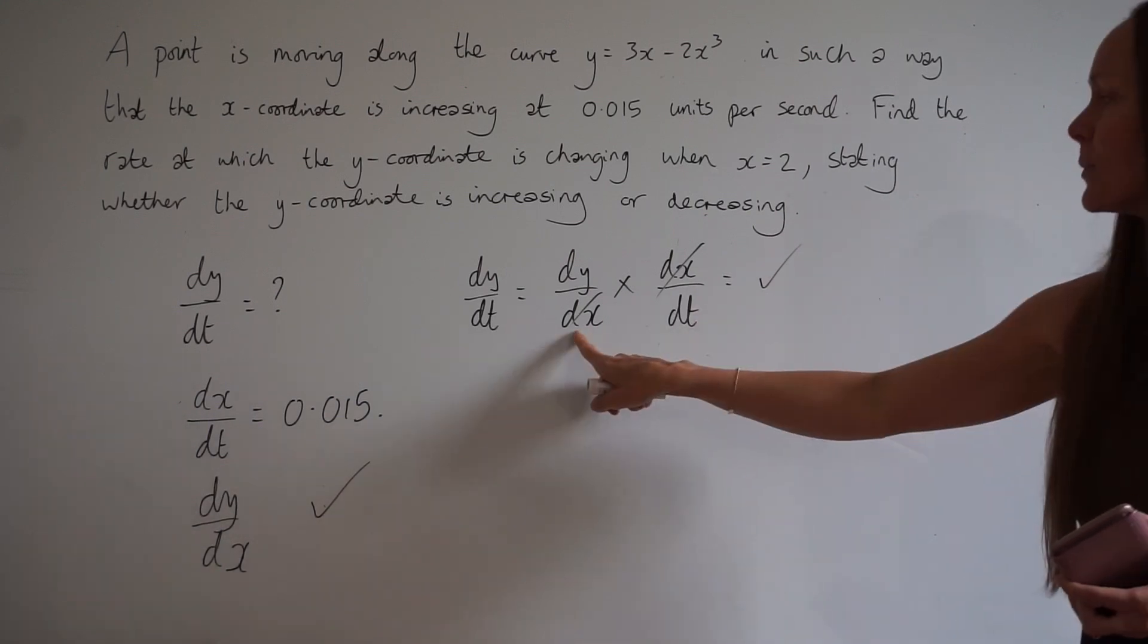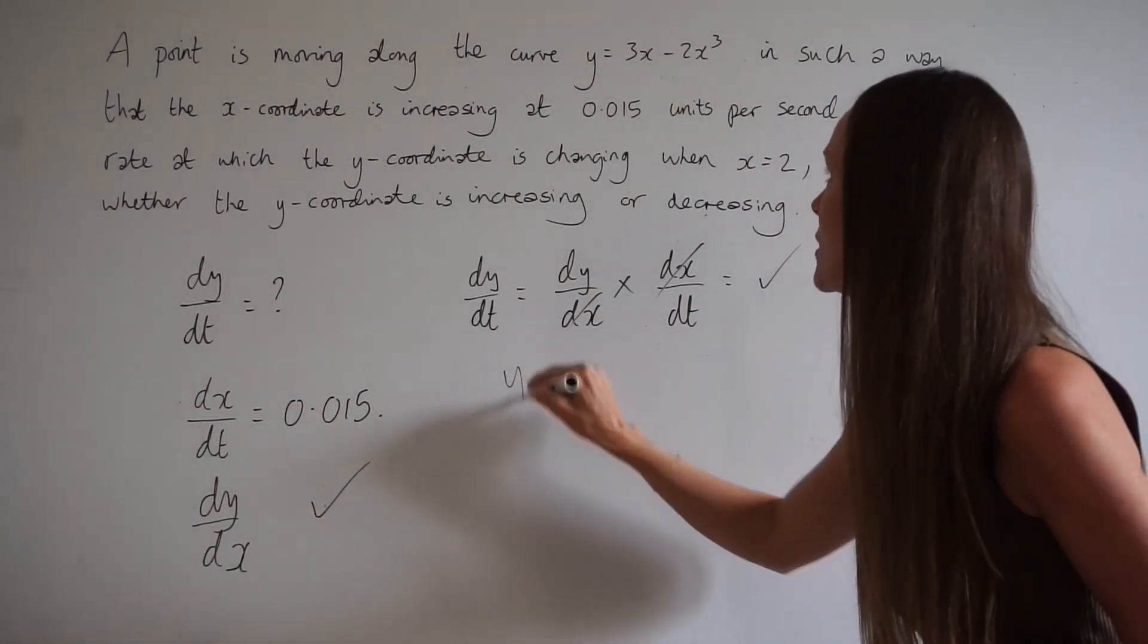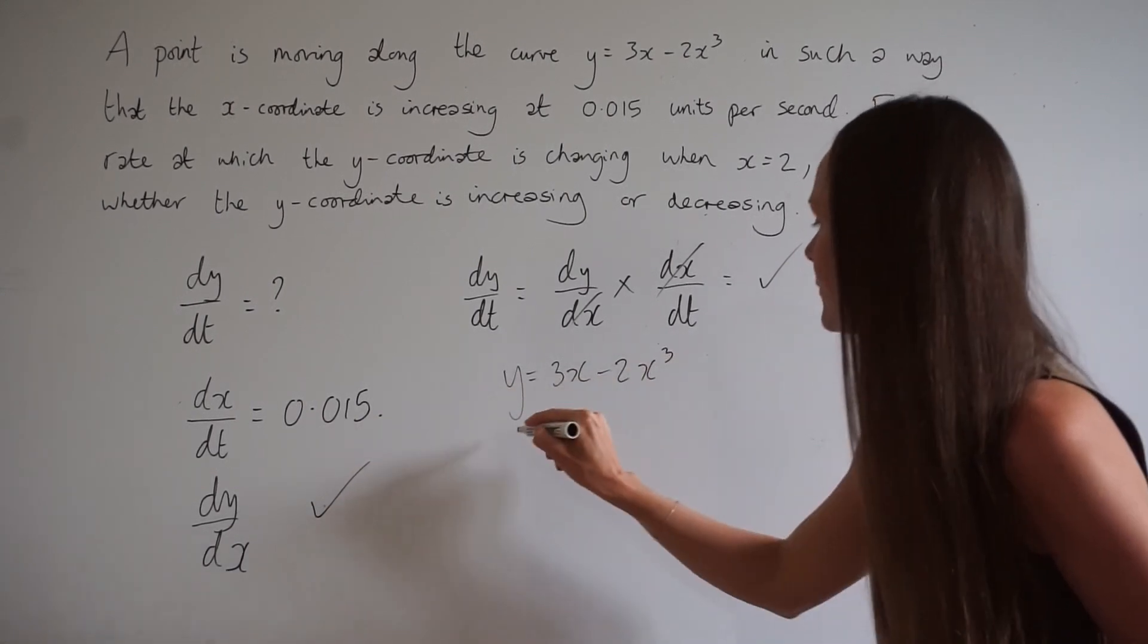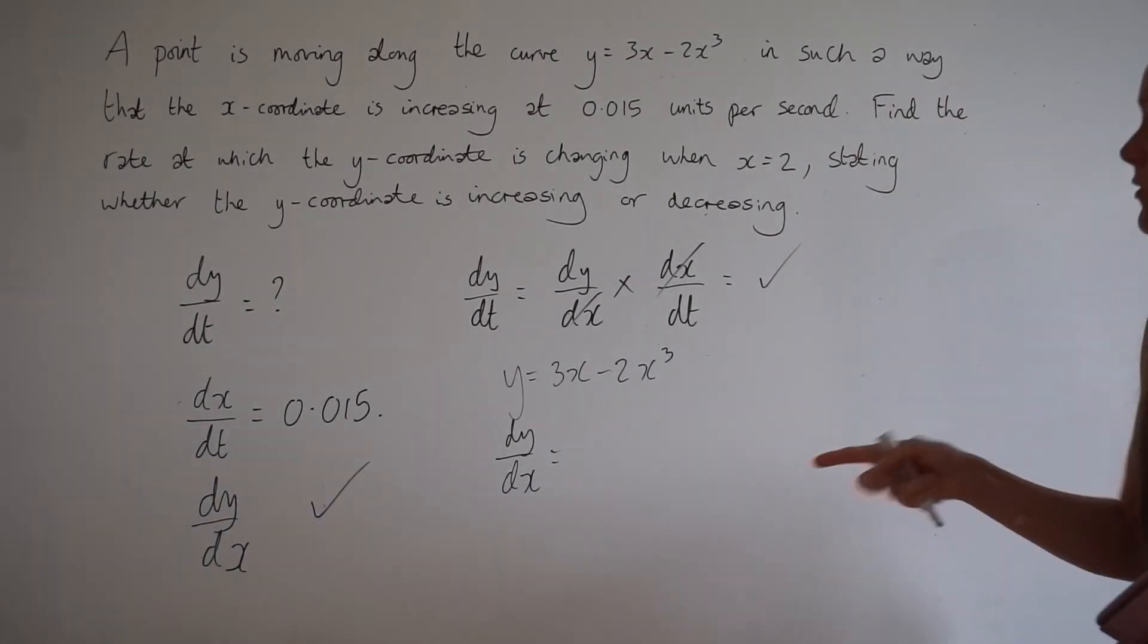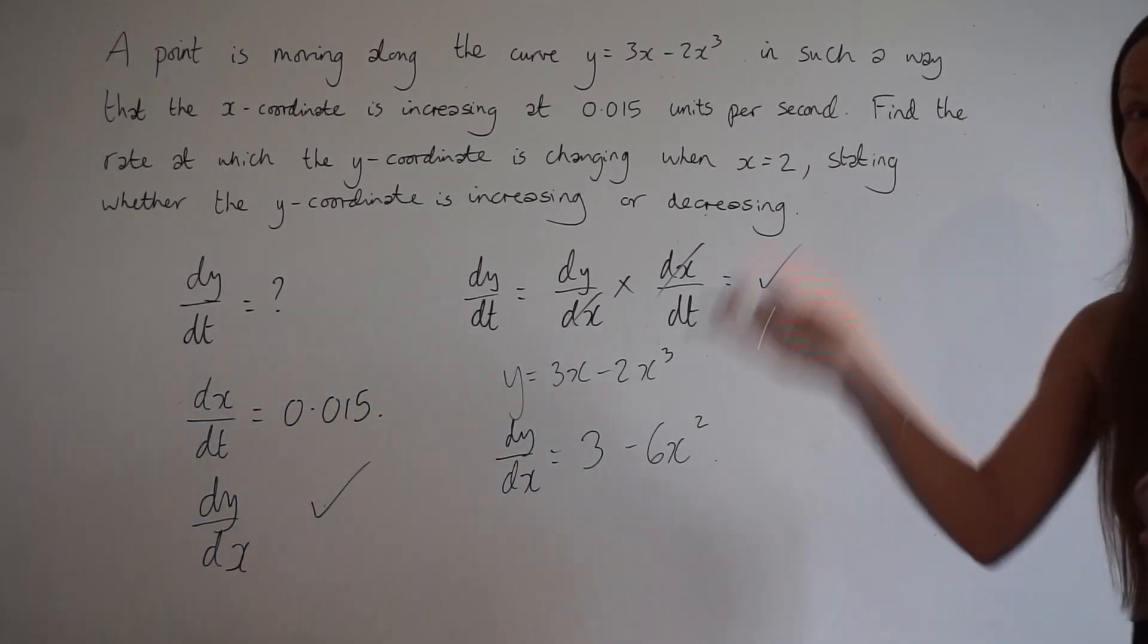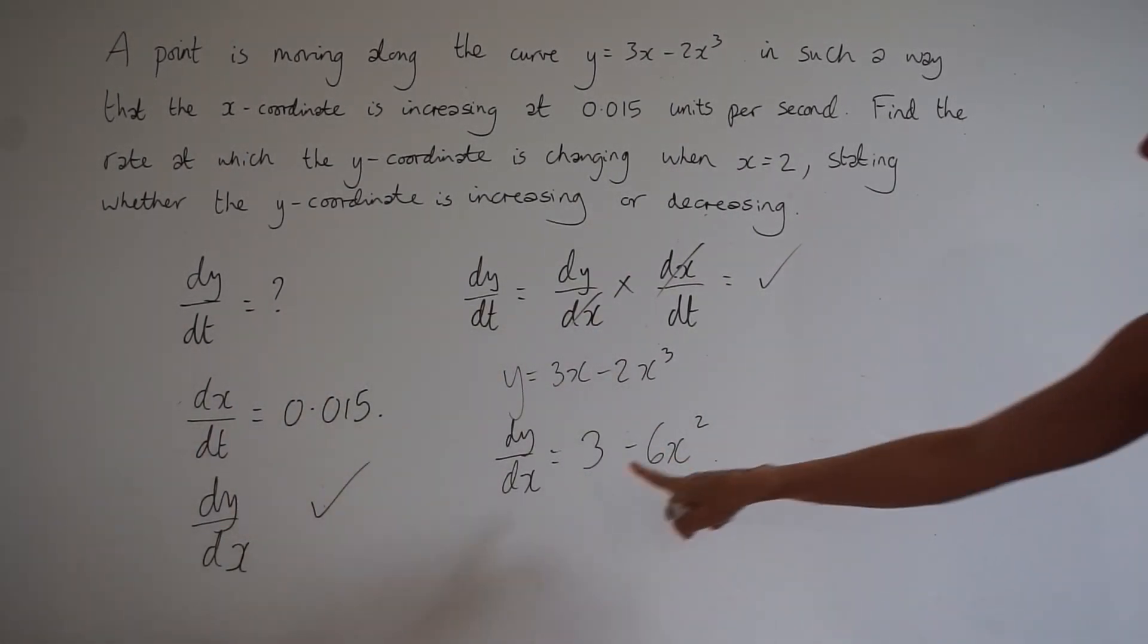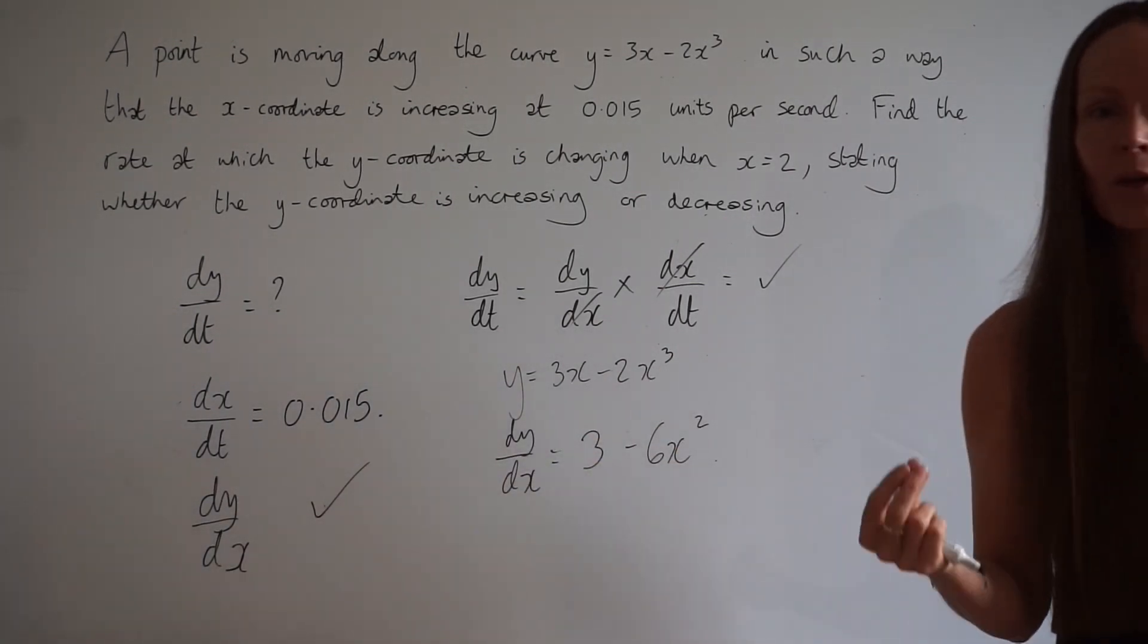Let's start with dy/dx. I'm going to write down the equation of the curve: y equals 3x minus 2x cubed. If I find the derivative, dy/dx, that's going to give me positive 3 and negative 6x squared. If you need help with derivatives, do have a look at my other lessons on my channel. So there's dy/dx, that's the expression for dy/dx along the curve.